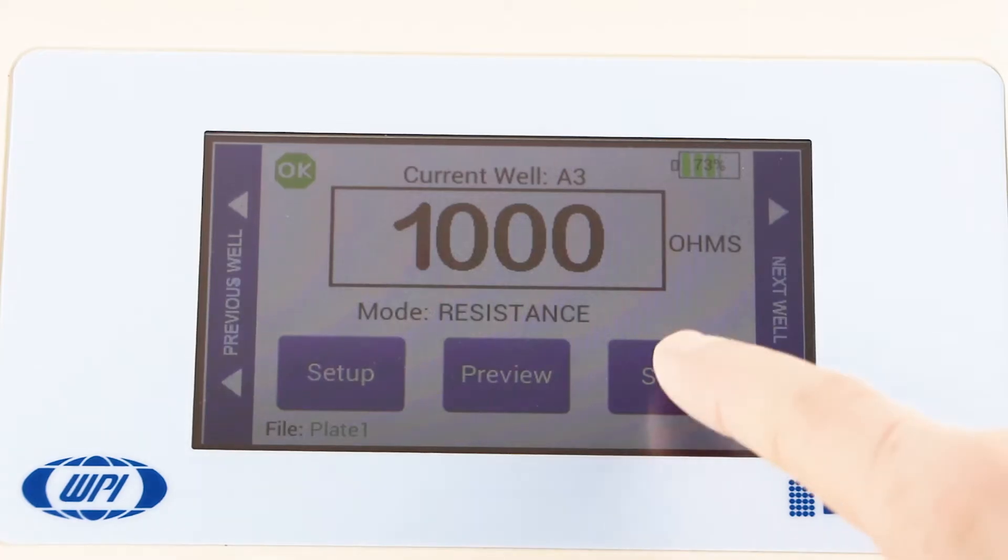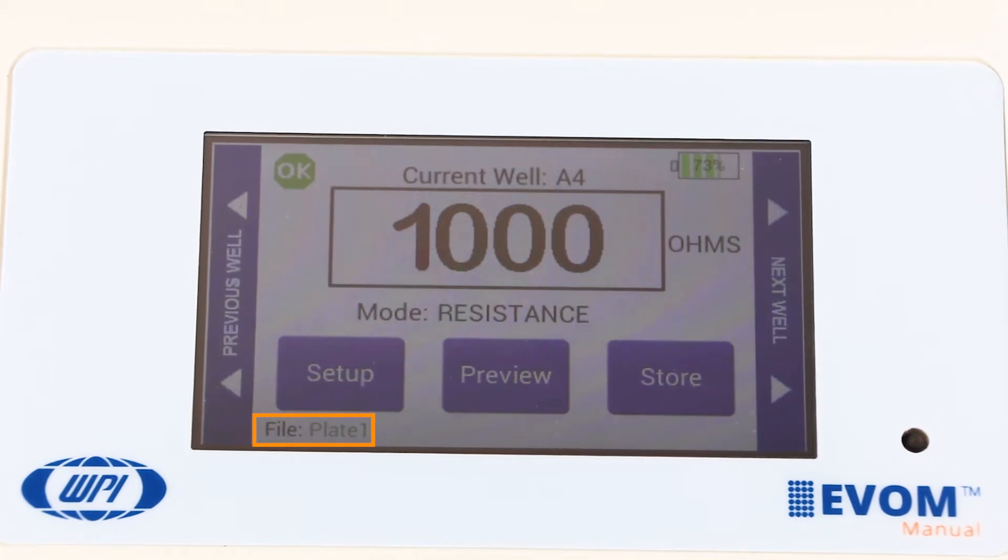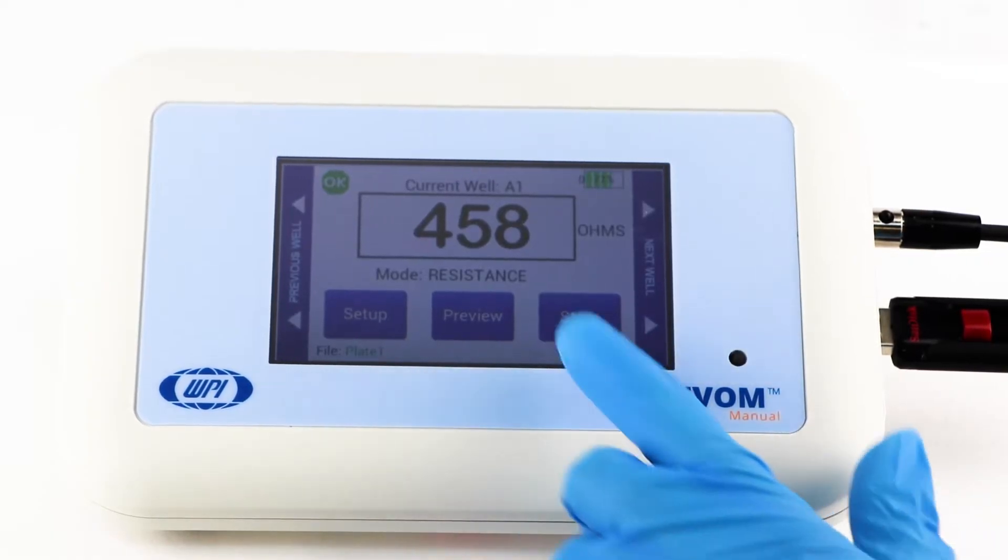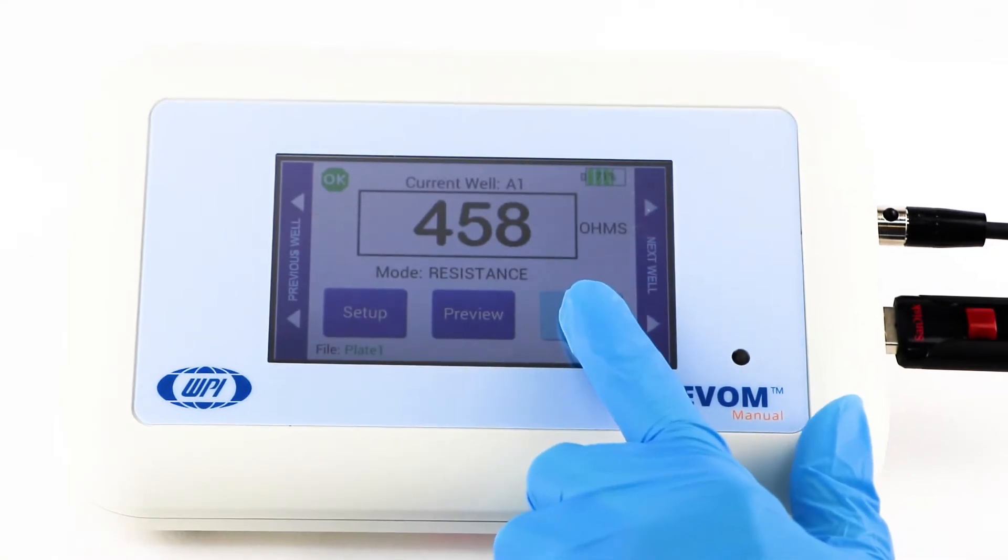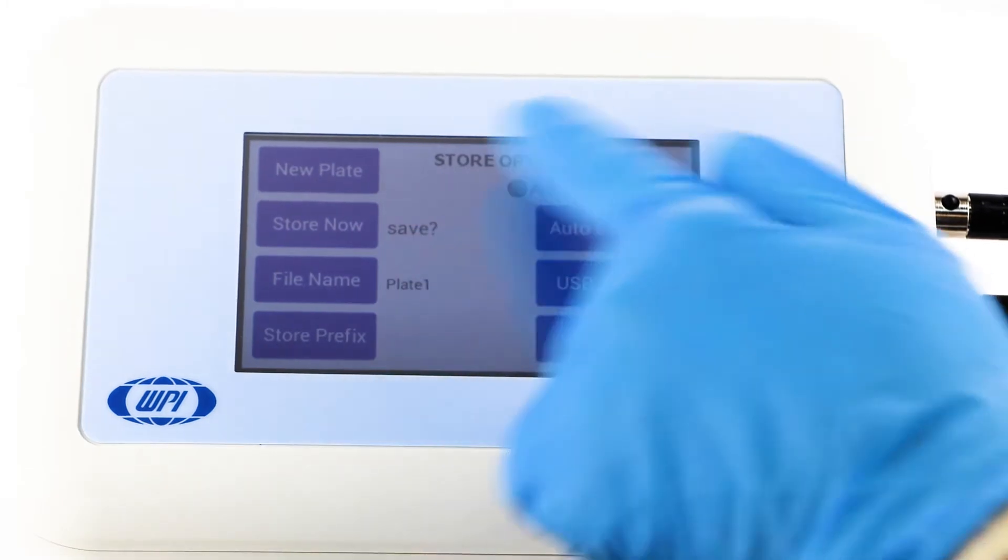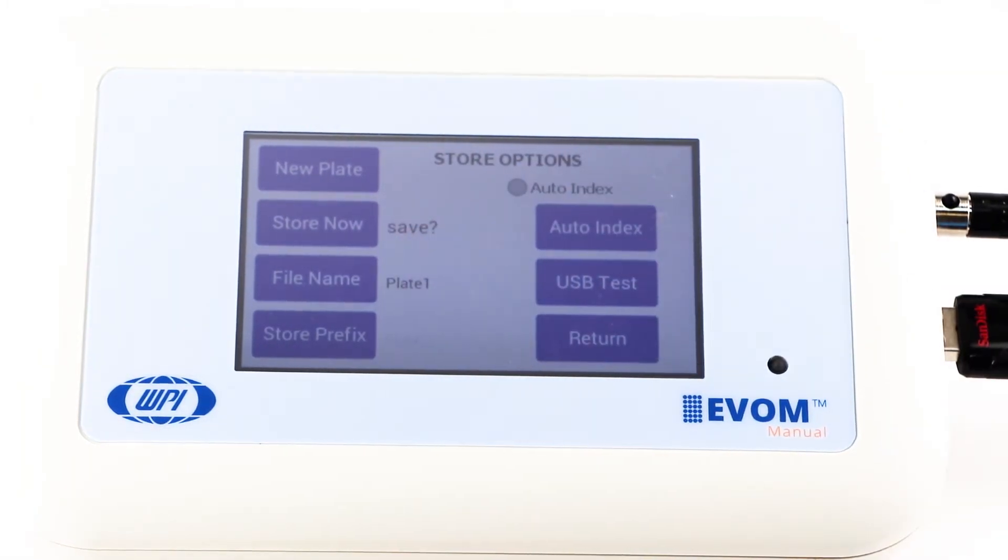By default, the file name is set to plate 1, but you may choose a prefix that auto-indexes or a unique file name. Press and hold the store button on the main screen for 2 seconds or press store screen on the setup menu to configure your stored data files.